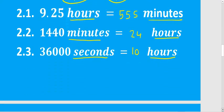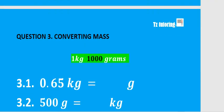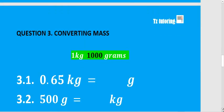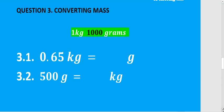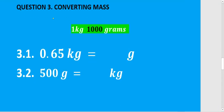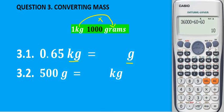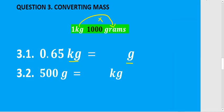For question 3 we're converting mass. One kilogram has a thousand grams. For 3.1 we want to go from kilograms to grams — going forward, so we multiply. 0,65 multiplied by 1000 gives us 650 grams.